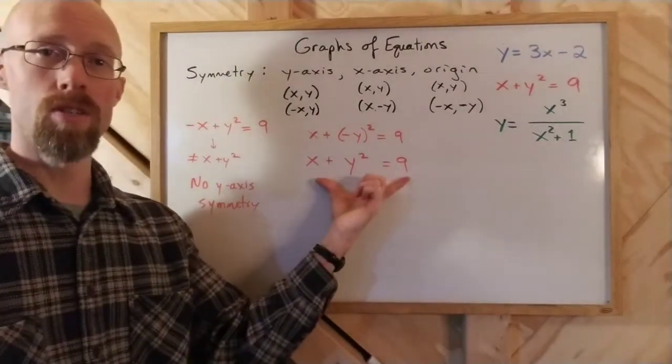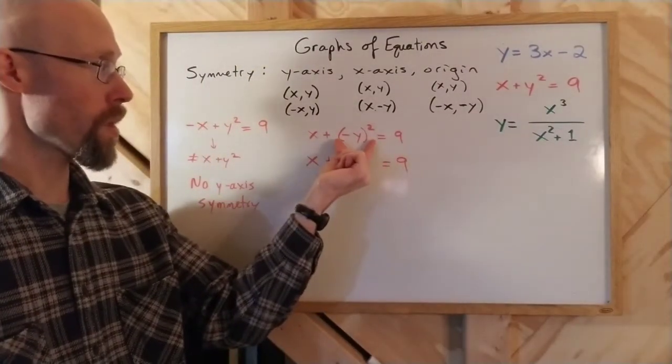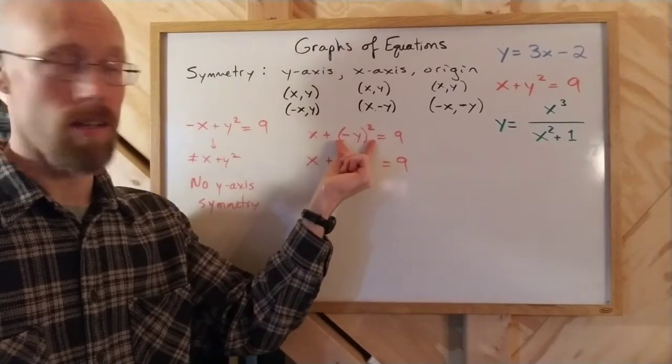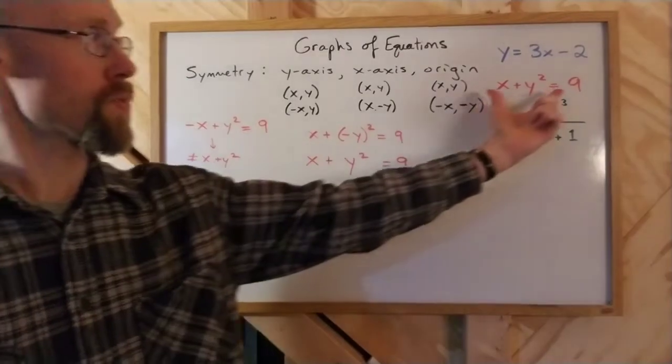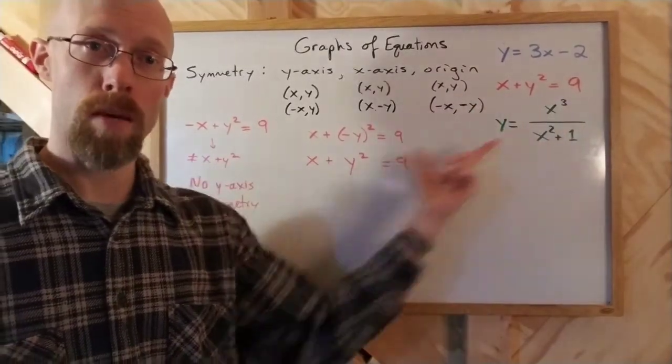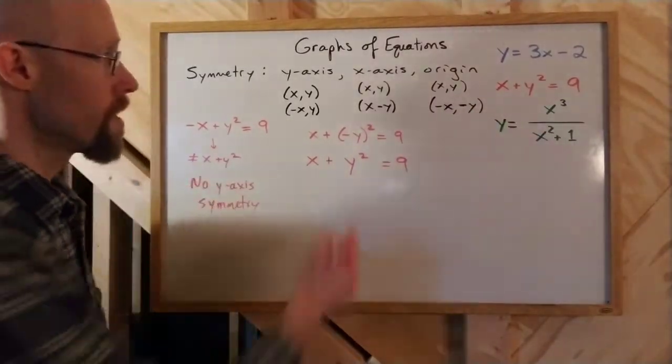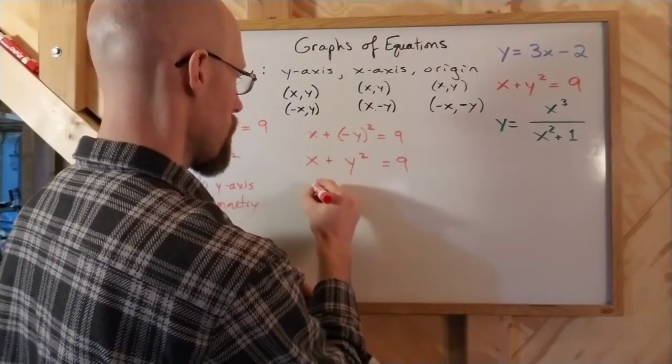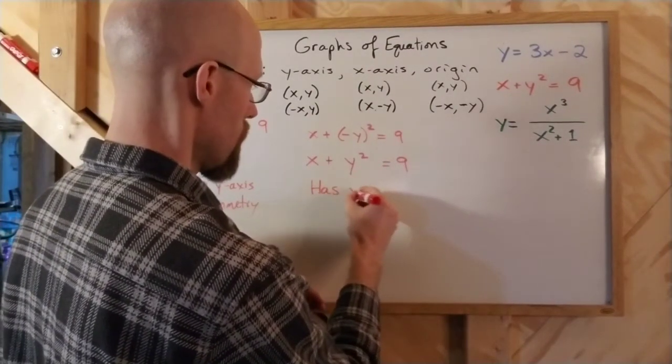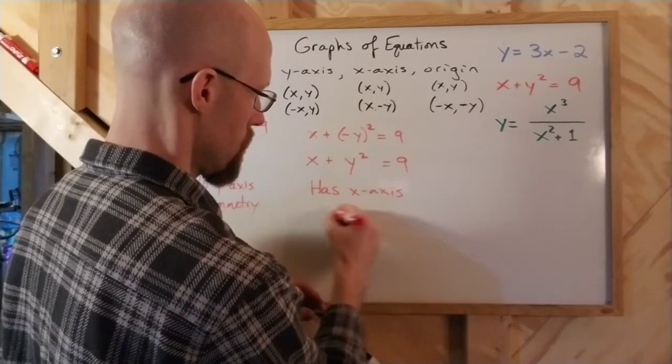And now I have the original equation because the square absorbs the negative, right? The negative disappears. I have the exact same equation as we started with. And as long as we can get back to that exact same equation, I can say that this does have x-axis symmetry. So it has x-axis symmetry.